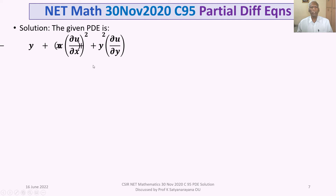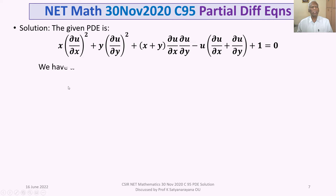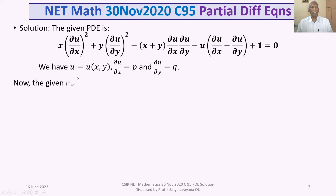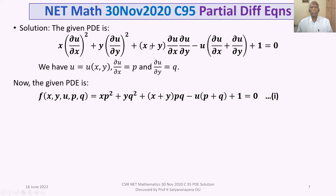The given partial differential equation is rewritten using the notation ∂u/∂x = p and ∂u/∂y = q. Then the PDE becomes xp² + yq² + (x+y)pq − u(p + q + 1) = 0, which we call equation 1. We define F(x, y, u, p, q) = xp² + yq² + (x+y)pq − u(p + q + 1), so that F = 0 is equation 1.